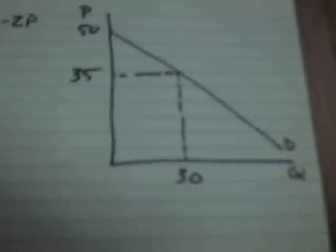So over here is what things look like graphically. 35 is the price. You actually consume 30. The most that you'd be willing to pay is the vertical intercept, and that's 50.